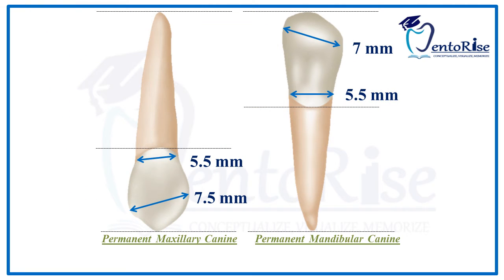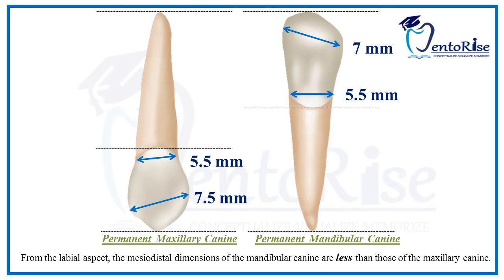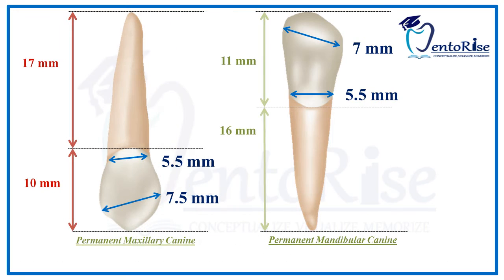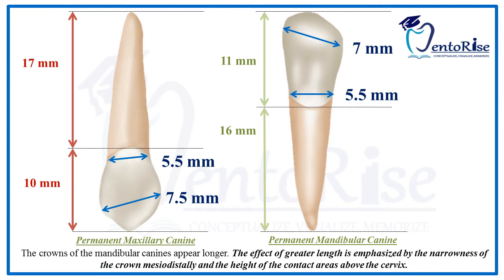Comparing the mesodistal dimensions of a permanent mandibular canine to those of the maxillary canine, we find that from the labial aspect, the mesodistal dimensions of the mandibular canine are less than those of maxillary canines. The greater crown length of the mandibular canine is further emphasized by two points: first, the narrowness of the crown mesodistally, which gives an appearance of the crown being slightly longer; and second, the height of the contact areas above the cervix. Both points make the crown appear much longer compared to that of the maxillary canine.